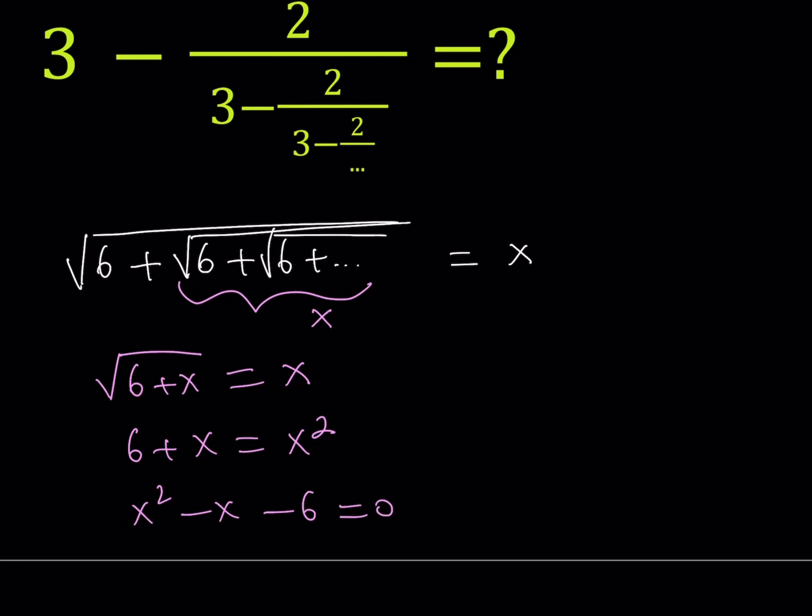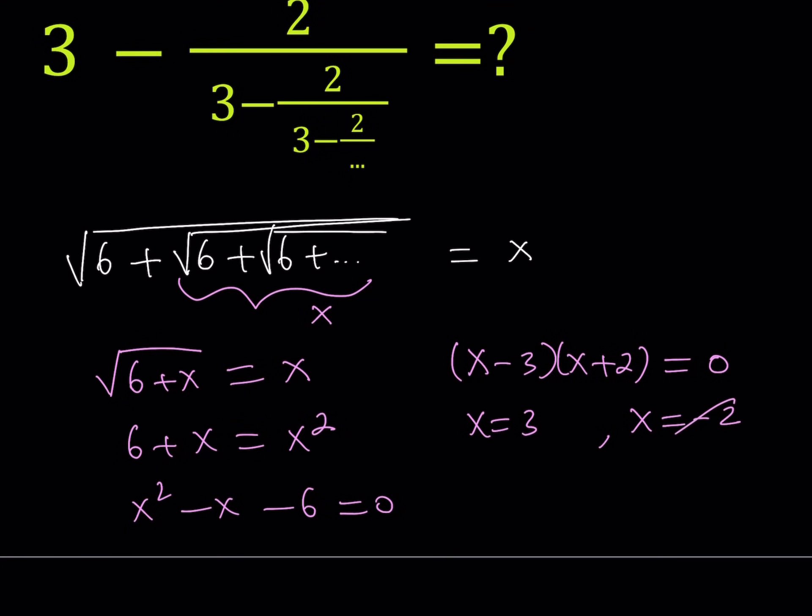And from here you would get the factoring x minus 3 times x plus 2 equals 0. And obviously from here, you could safely say that x is either 3 or negative 2. It's obvious that this expression cannot be negative. Therefore, the only acceptable answer is x equals 3.